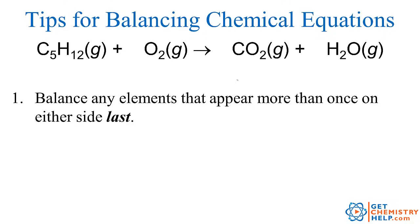Let's try another example. In this one, we have a combustion reaction where I have C5H12 reacting with oxygen to produce carbon dioxide and water. One tip that will help you is to look at all of the elements. If you ever see an element that appears more than once on either side of the equation, then you make sure you balance that one last. So for example, carbon is in one place on the reactants and only one place on the products. Hydrogen is in one place on the reactants and one place on the products. Oxygen is in one place on the reactants, but it's in two different places on the products. So that tells me I want to balance oxygen last. You might underline it or star it just to remind yourself to do that one last.